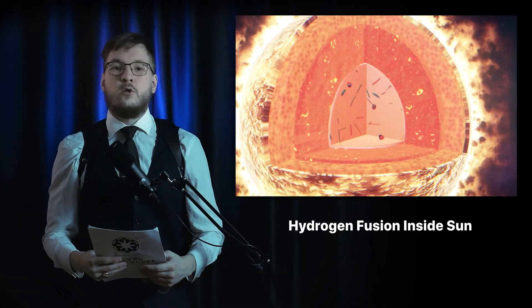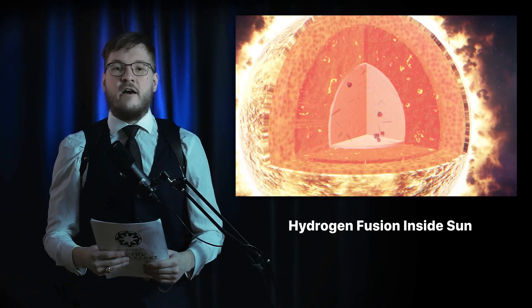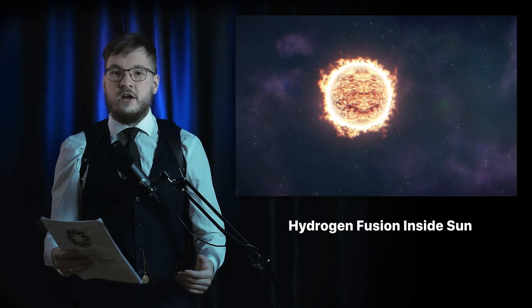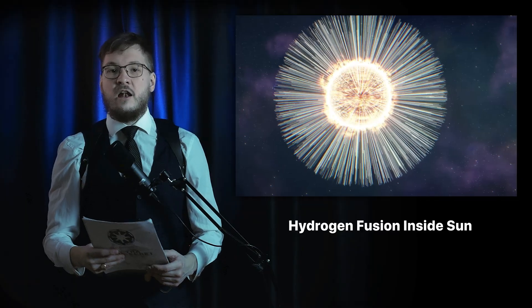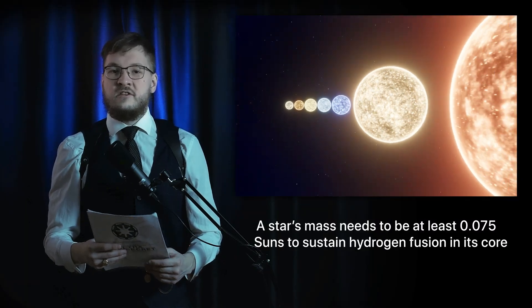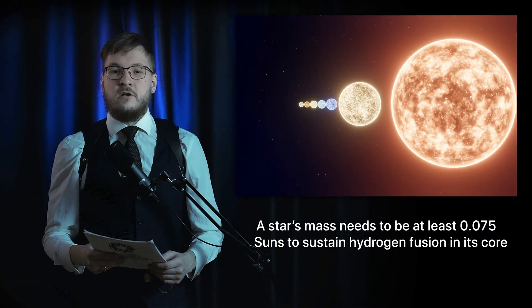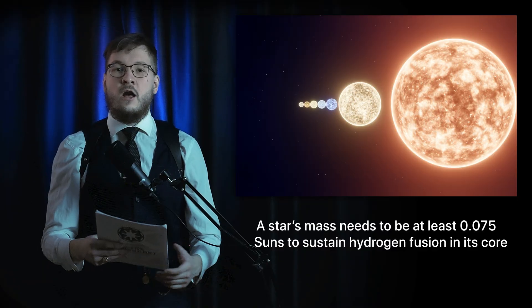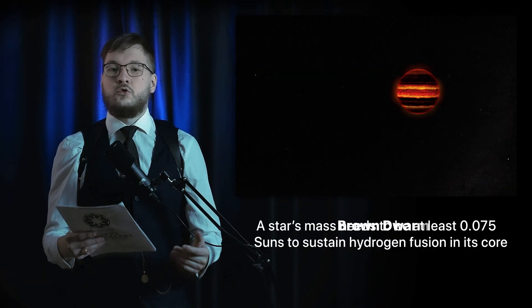But this process can only happen if a star has enough mass to create the necessary pressure in its core. That limit is roughly 0.075 solar masses. If an object falls below the line, it becomes a brown dwarf.